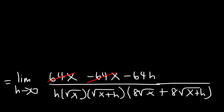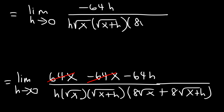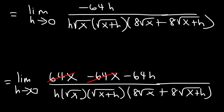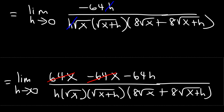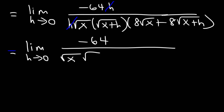Now let's cancel those two terms — 64x and negative 64x. So we're left with the limit as h approaches 0, negative 64h, divided by everything in the denominator. In the next step we can cancel h. As soon as we can do that, we can use direct substitution. But right now we have the limit as h approaches 0, negative 64, over square root of x, times square root of x plus h, and so forth.